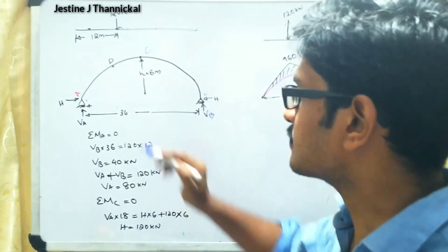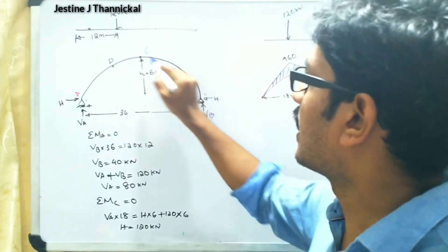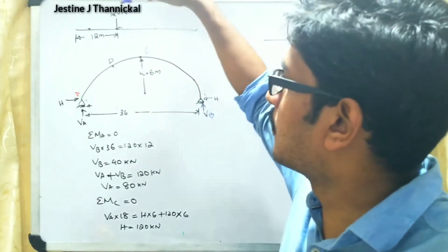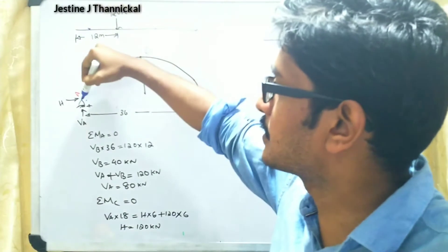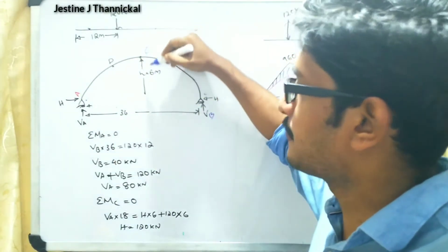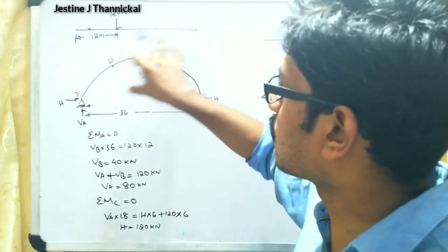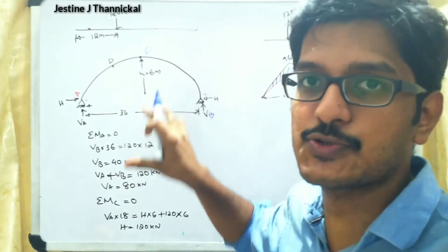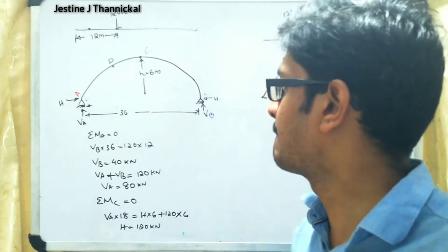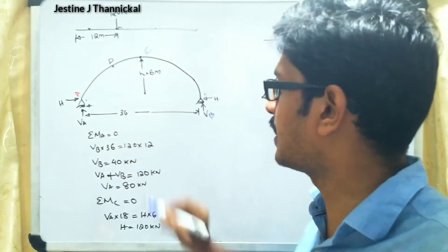So, for a three-hinged parabolic arch, let A, B, and C be the points, with C as the crown point. A 120 kilonewton load is acting at a distance of 12 meters from support A. The total span is 36 meters and the crown vertical distance from the ground is 6 meters. We need to draw the bending moment diagram, so first we find the reactions VA, VB, and the horizontal thrust H.